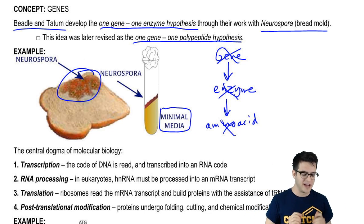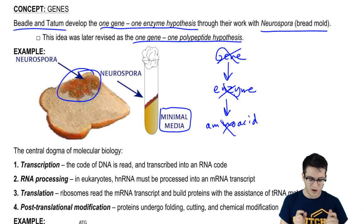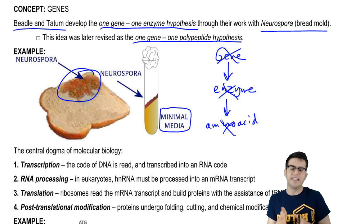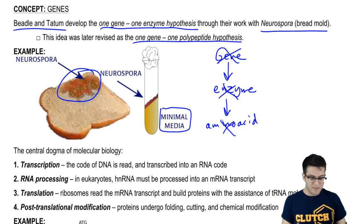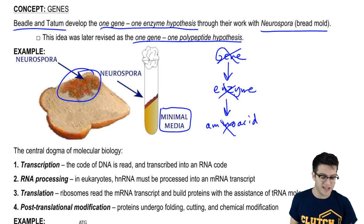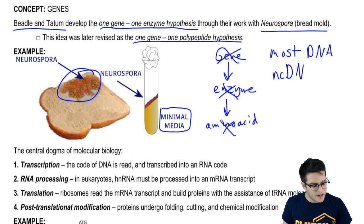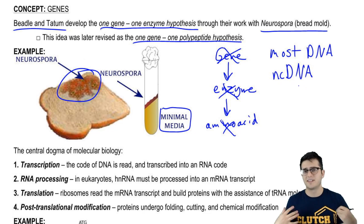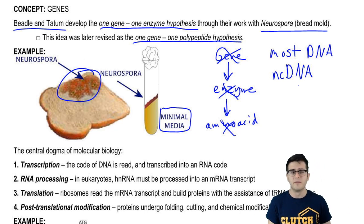Even that is not a correct way to think about eukaryotic DNA. What we're going to see is that each gene in a eukaryote can actually code for multiple polypeptides. More so than all of that, most of the DNA in organisms — eukaryotes, prokaryotes alike — is what we call ncDNA, or non-coding DNA, meaning DNA that doesn't code for proteins. Only a very small portion of our DNA actually codes for proteins.